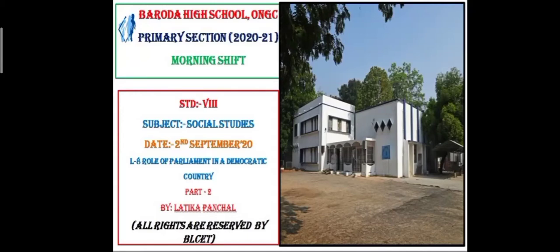Good morning dear children. I hope democracy and the role of parliament is clear to you from our first session. We will recall what we have done in the previous session and then continue with today's part. We learned democracy is rule of the people, by the people and for the people. The distribution of power and responsibility makes the representatives of the government accountable to the citizens. We also learned about monarchy, that is rule of the king. The formation of parliament constitutes of President, Lok Sabha and Rajya Sabha.